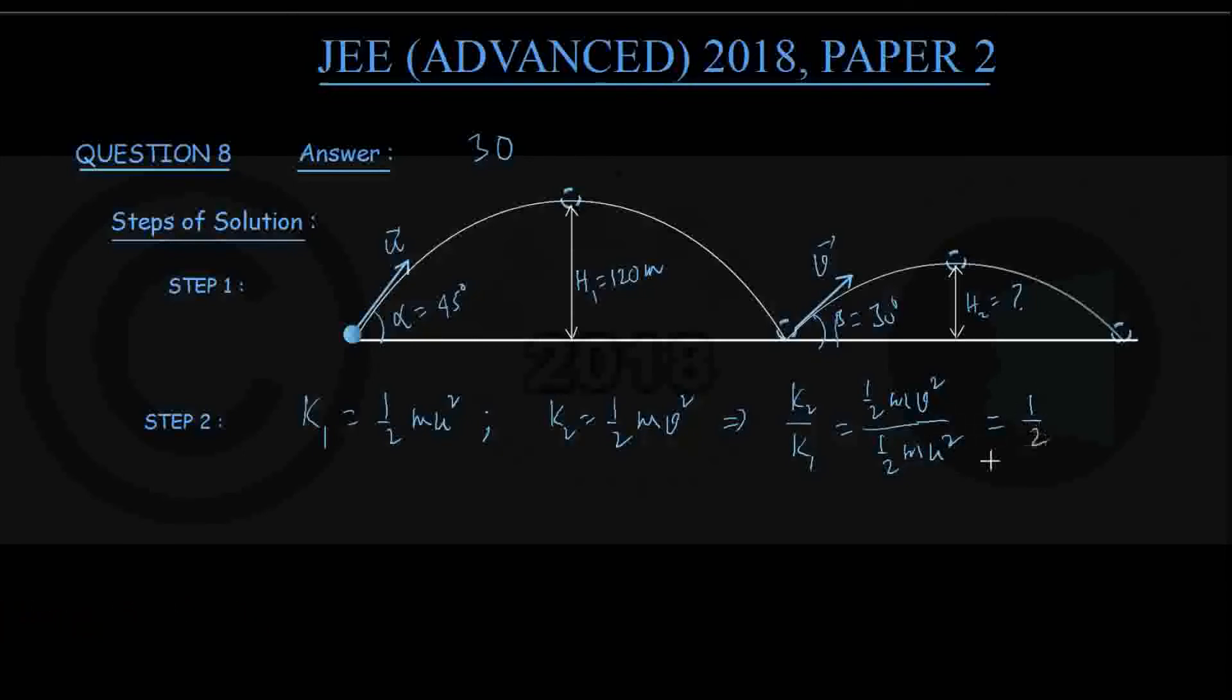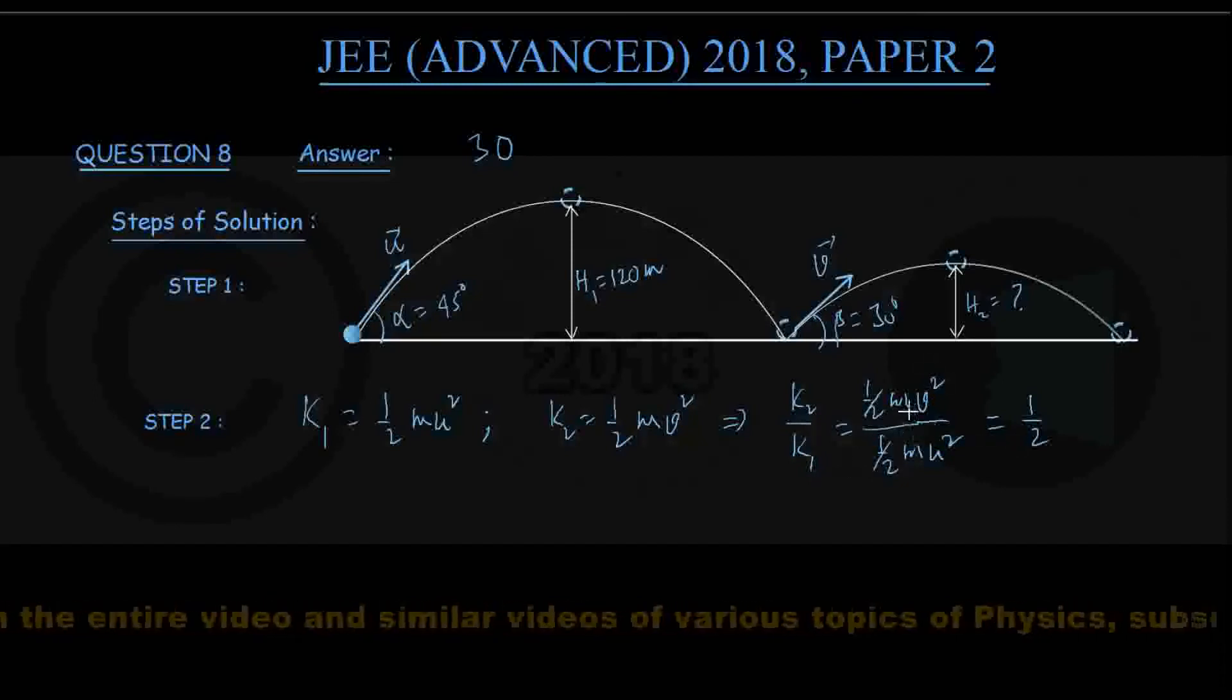You can write therefore that the ratio k2 upon k1, that is half mv squared upon half mu squared, is given to be half, isn't it. They have said during the bounce the ball loses half of its kinetic energy. That is why k2 must be half of k1.